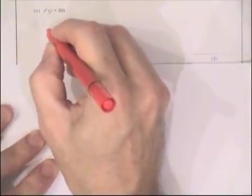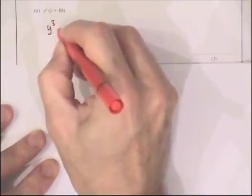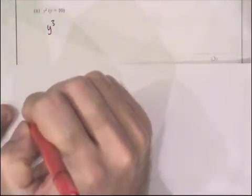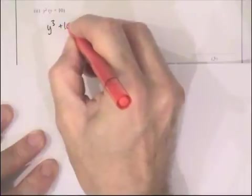Next we have another bracket to expand, but it's got y squared outside the bracket. Everything inside is multiplied by y squared. We've got a y inside multiplied by y squared. That gives us y cubed. Then we've got a plus 10 to be multiplied by y squared. That gives us plus 10y squared. That's the expansion of that bracket.